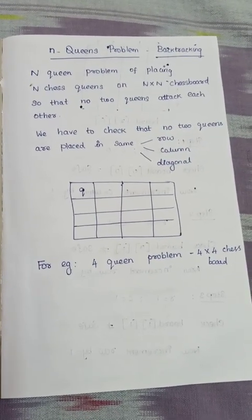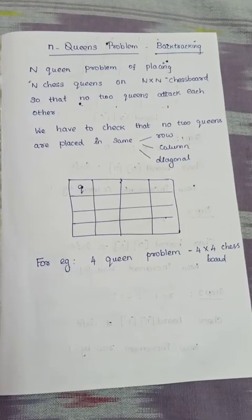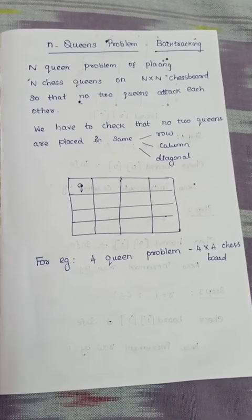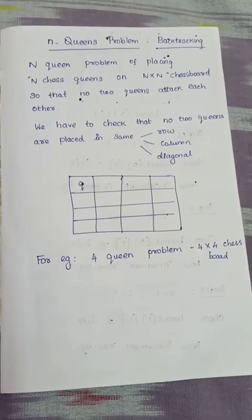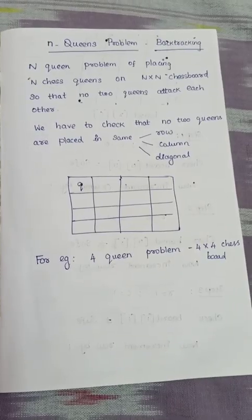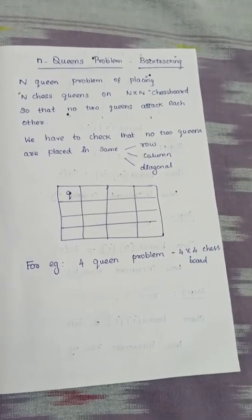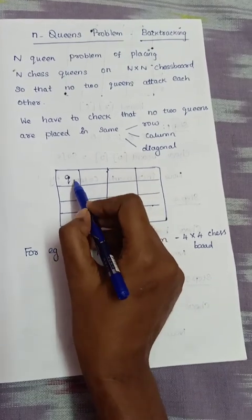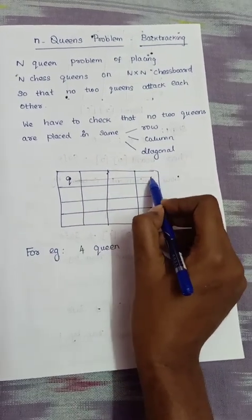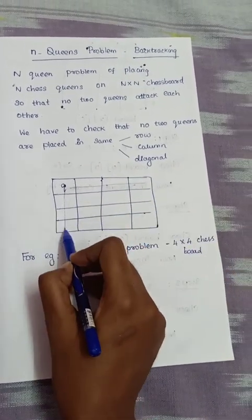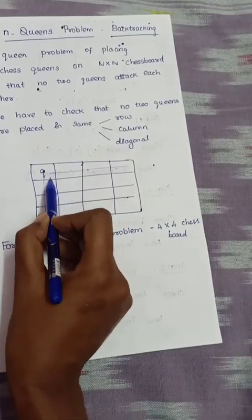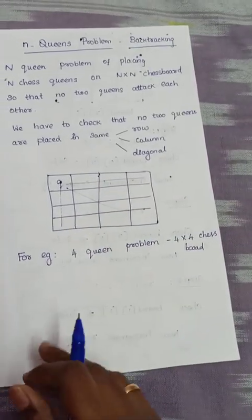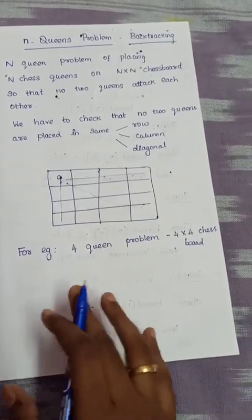We have to check that no two queens are placed in the same row, same column, or same diagonal. If we place a queen at a position, we verify these conditions for row, column, and diagonal attacks before placing.